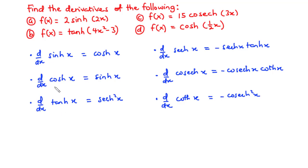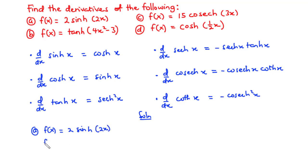Now, using these equations, let's try to solve questions A through to D. So for A, we have the function f(x) = 2sinh(2x). Therefore, f prime of x is equal to... we write the 2 and then we have a bracket. Now let's differentiate the argument — if you differentiate 2x with respect to x, that is equal to 2. When you differentiate sinh, you have cosh. So that becomes 2cosh(2x).